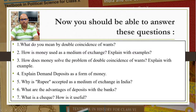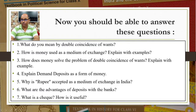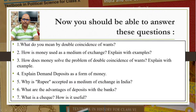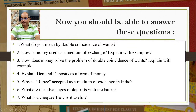Possible exam questions include: What is double coincidence of wants? How does money act as a medium of exchange? How does money solve the problem of double coincidence of wants? Explain demand deposits as a form of money. Why is rupees accepted as a medium of exchange? What are the advantages of deposits with banks? What is a check and how is it useful? In the next class, we will cover the loan activities of banks.